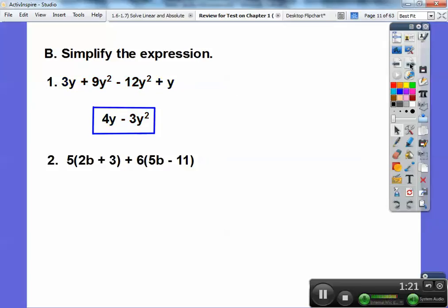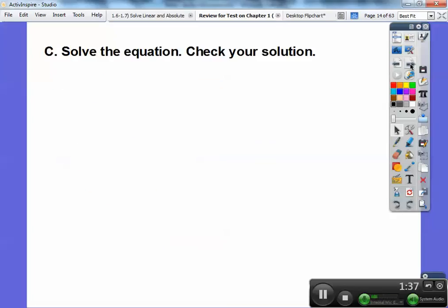Same on this one. Go ahead and distribute the 5 through and the 6 through. When I distribute, I get 10b + 15. Here I get 30b - 66. And then you're going to combine like terms, and you get 40b - 51. Notice how I did the colors to show you which ones are which.